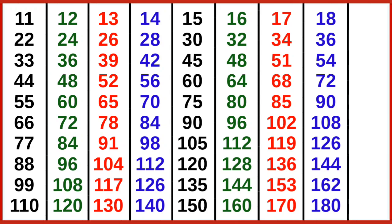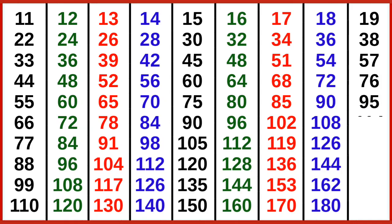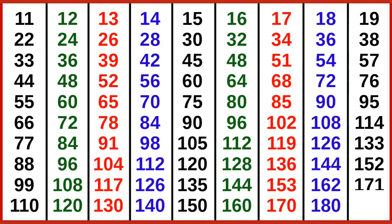19 ones are 19, 19 twos are 38, 19 threes are 57, 19 fours are 76, 19 fives are 95, 19 sixes are 114, 19 sevens are 133, 19 eights are 152, 19 nines are 171, 19 tens are 190.